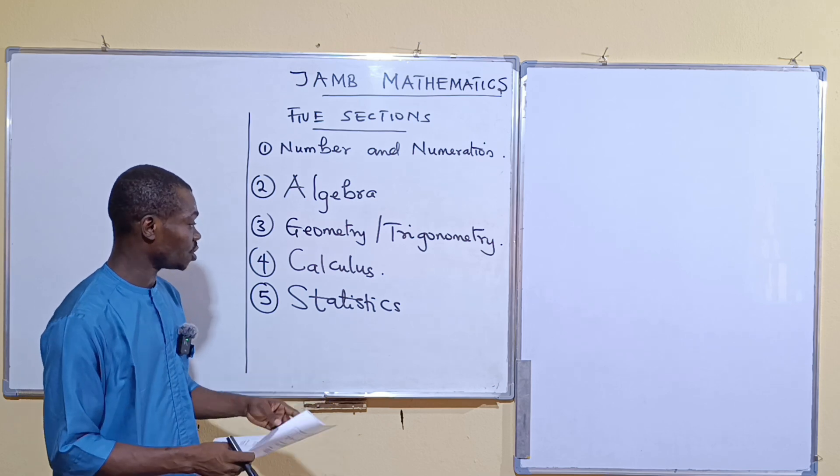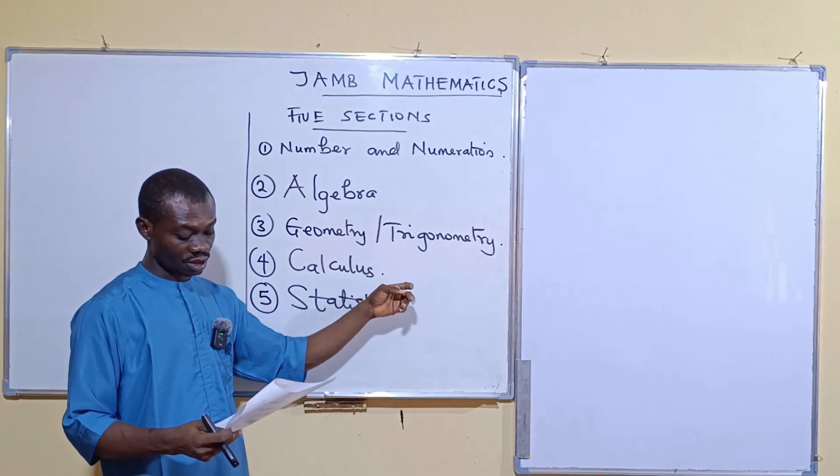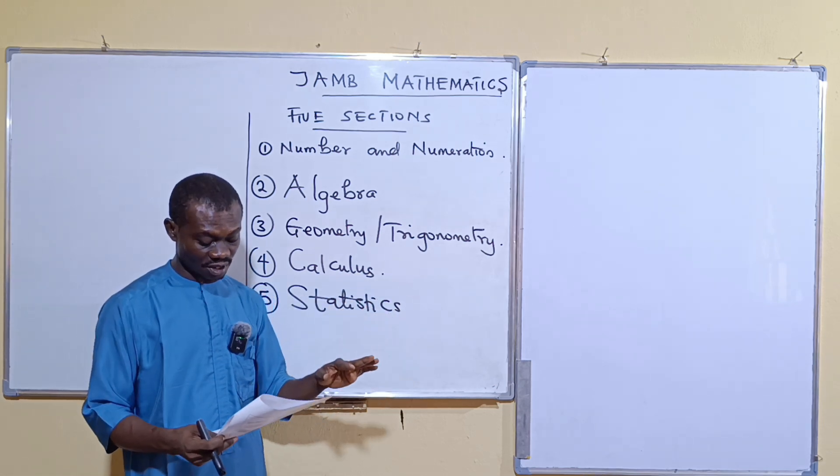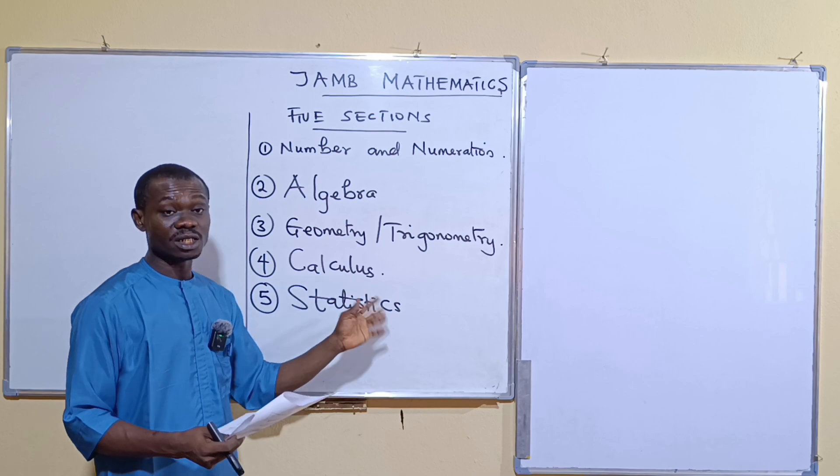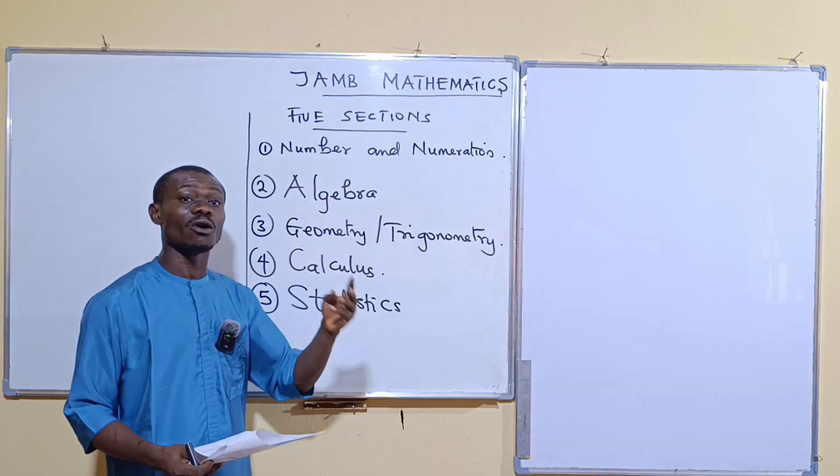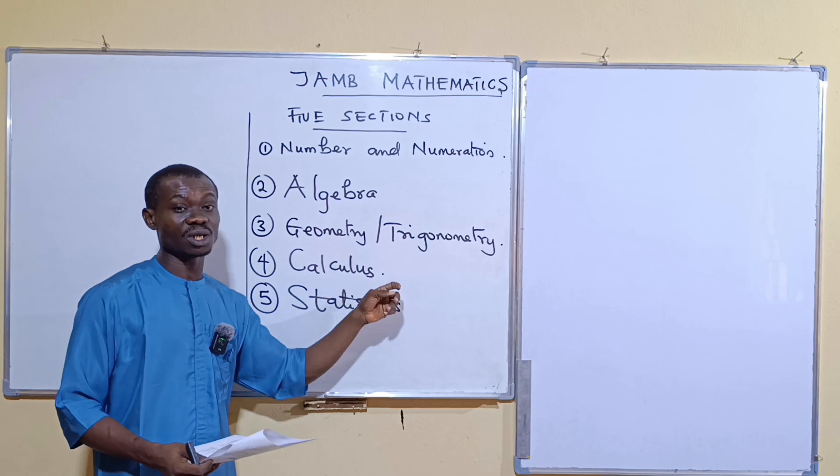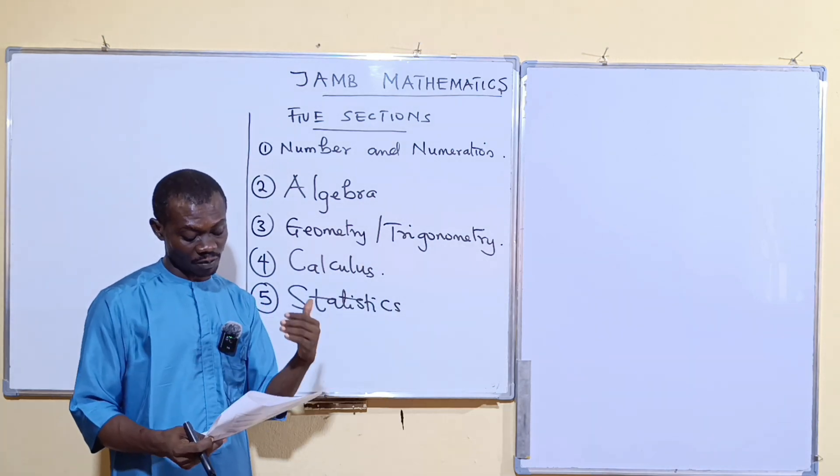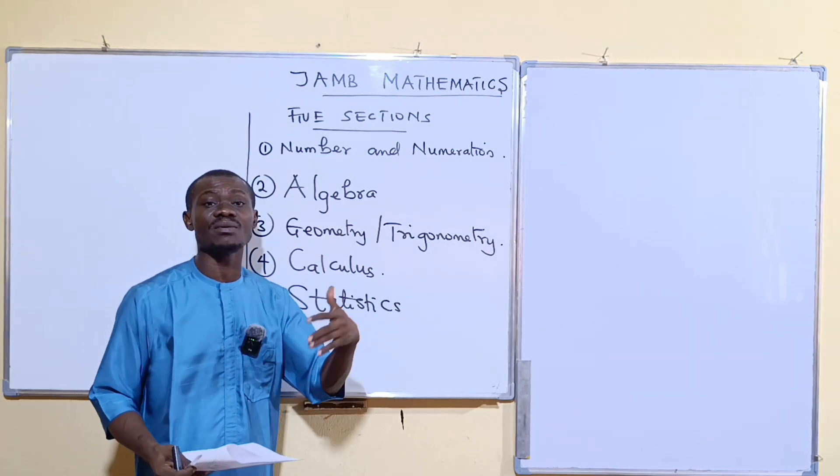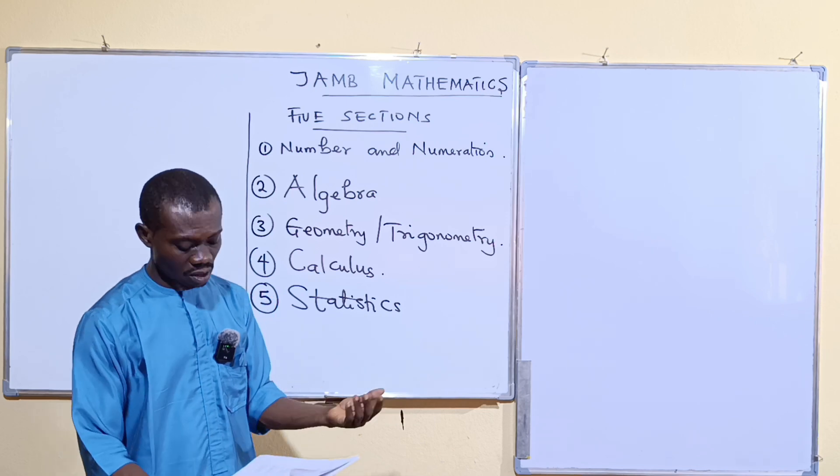And then for the number four, I already mentioned differentiation, application of differentiation, and integration. So these are just the three things you will see or four things. Differentiation, application of differentiation, integration, and application of integration. Under application of integration, you just see areas under curve and all of that. We will take care of that.